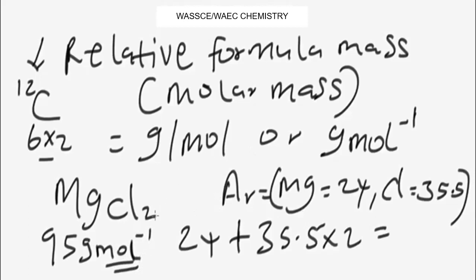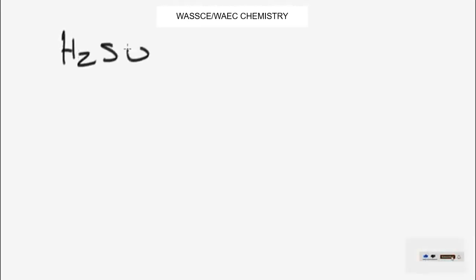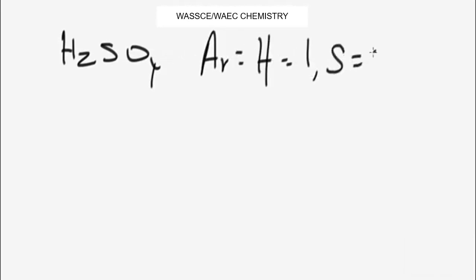Now let's look at another example — sulfuric acid, H₂SO₄. We are given the relative atomic mass of hydrogen as 1, sulfur as 32, and oxygen as 16. Pause the video and see if you can figure out the molar mass of this compound, then we'll do it together.